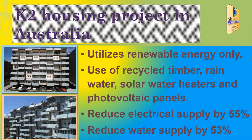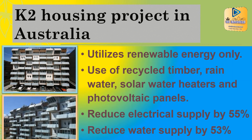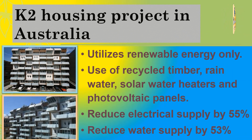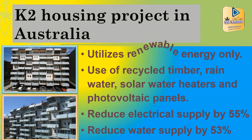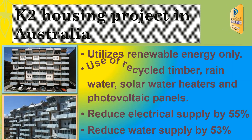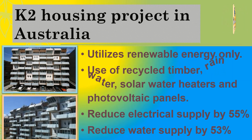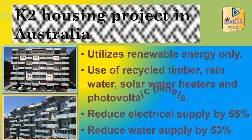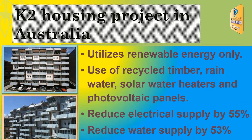K2 Housing Project in Australia utilizes renewable energy only. It uses recycled timber, rainwater, solar water heaters, and photovoltaic panels. It reduces electrical supply by 55% and water supply by 53%.